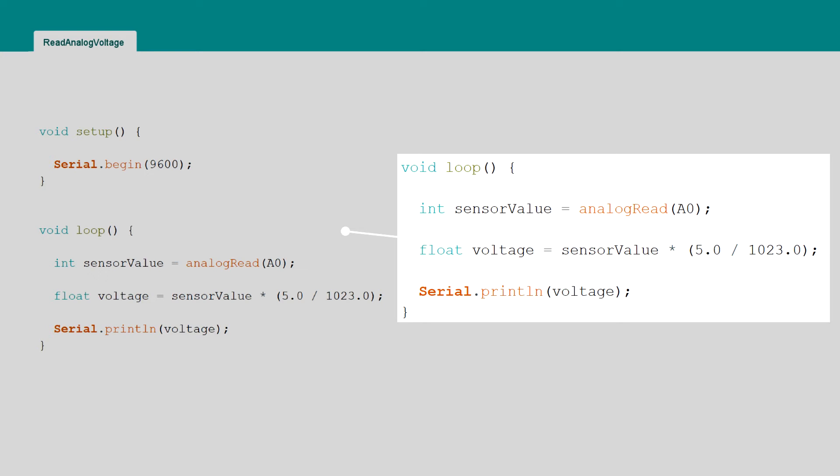Then the voltage is calculated by multiplying the sensor value by 5 and dividing it by 1023. Note that we are using floats to prevent rounding errors.